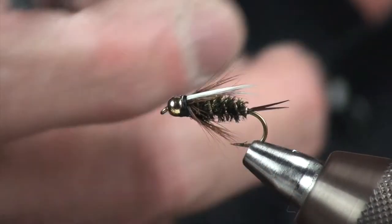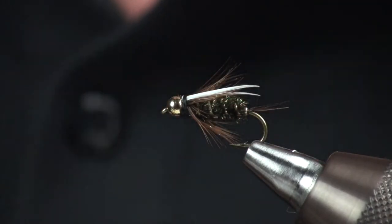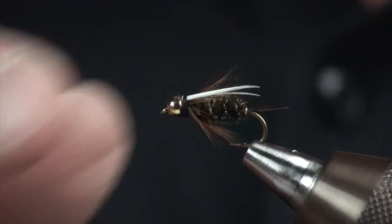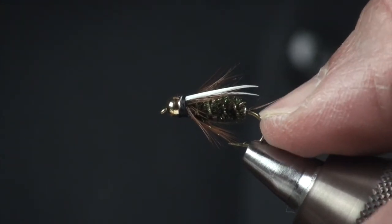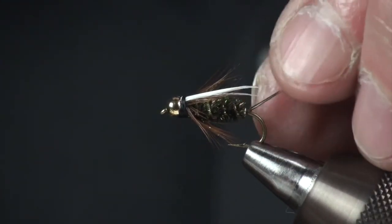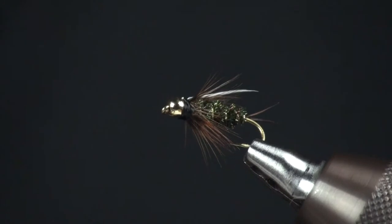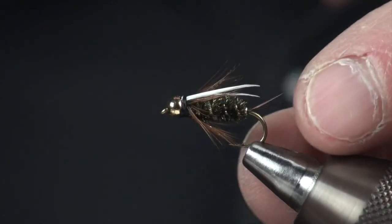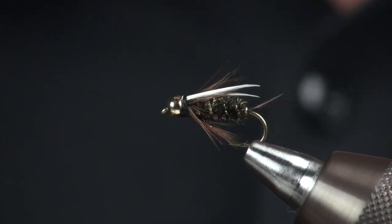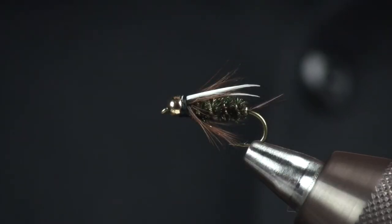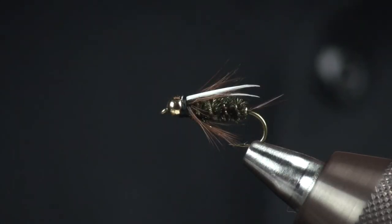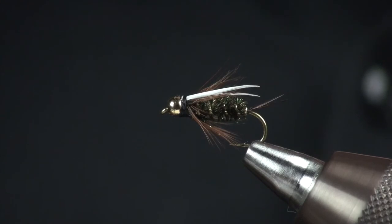It wouldn't hurt to put a little drop of head cement in right there. Make it a little bit more durable. Check your proportions. Make sure your tail is coming off on the sides. Your wing is on top. And that is a little beadhead Prince Nymph.